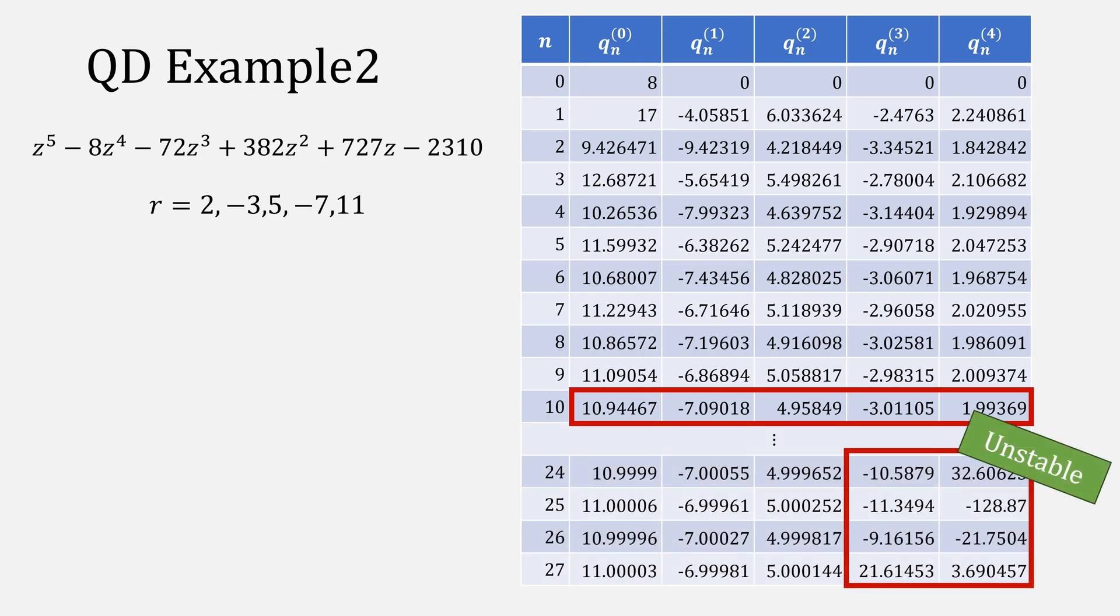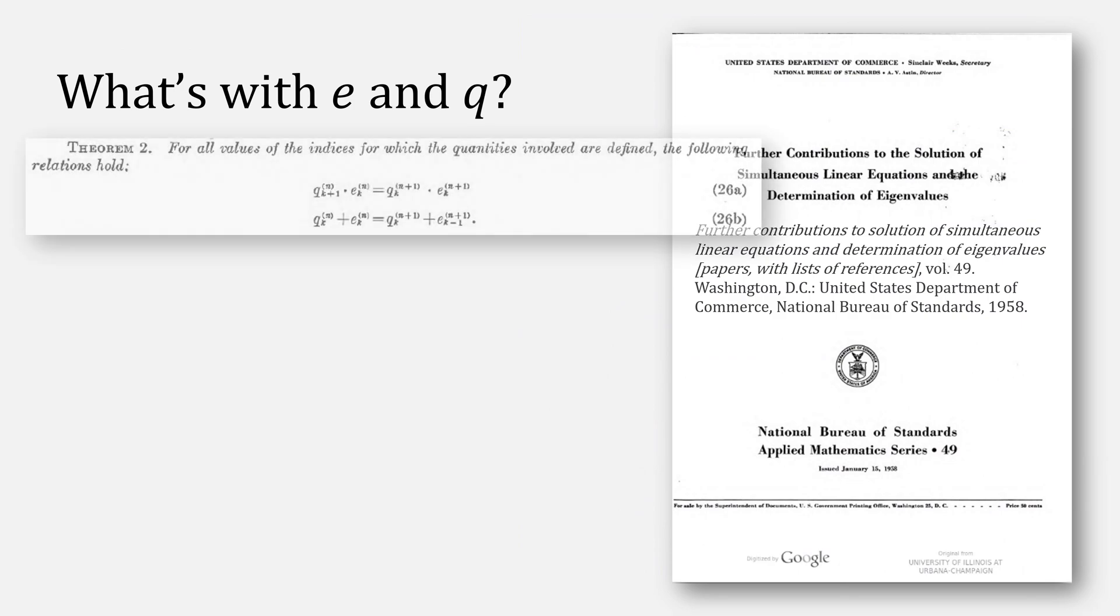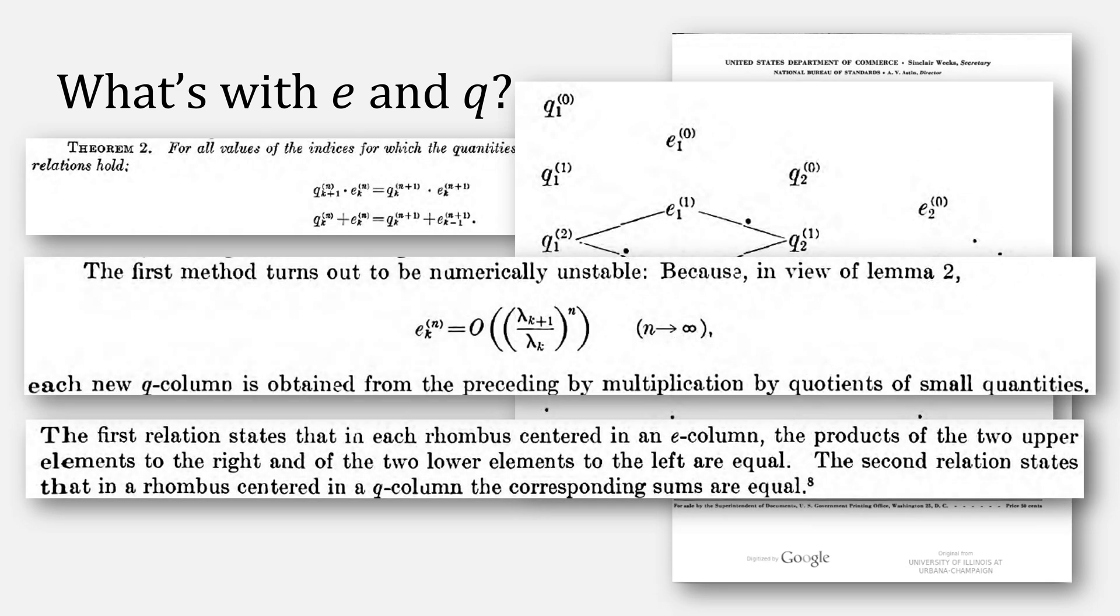If you're wondering about those strange equations for e and q, they give us this property, which is actually the law of equal rhombi, and it gives the method its power, but it also gives it its numerical instability because those e terms get divided, giving very small quotients, which are then multiplied by other numbers.